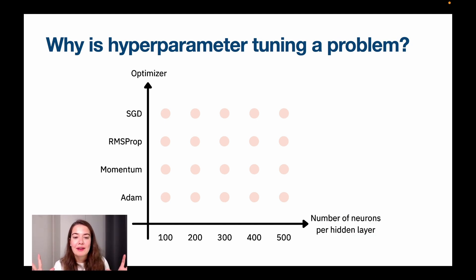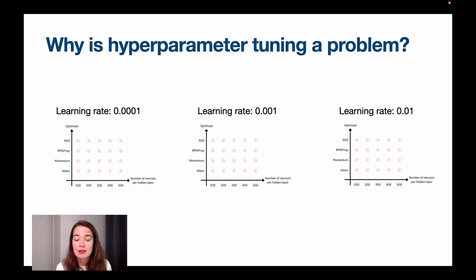Let's say we have two hyperparameters. Let's say we are trying to optimize the number of neurons per hidden layer, for one layer, because you can have different number of neurons in each hidden layer, and the optimizer. So let's say we are trying gradient descent, RMS prop, momentum, and Adam. What's going to happen is that in this case, we have 20 cases, and that wouldn't even be very hard to try them one by one. But if you also want to add learning rate into this, all of a sudden, you're going to have 60 different possibilities.